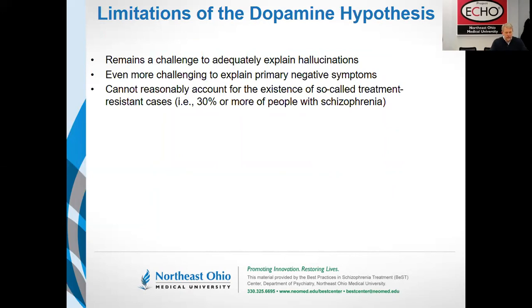The dopamine hypothesis is actually pretty simple: dopamine is related to psychosis and drugs that block dopamine can help alleviate it. It remains the oldest hypothesis we have. However, while the hypothesis can well explain suspiciousness, paranoia, and unusual ideas through the process of aberrant salience, it is somewhat tortured in explaining how hallucinations work. It's even more challenging in this model to explain primary negative symptoms, and the hypothesis is unhelpful in explaining the mechanism of illness for the 30% or more of people with schizophrenia for whom dopamine receptor blockers clearly do not work.